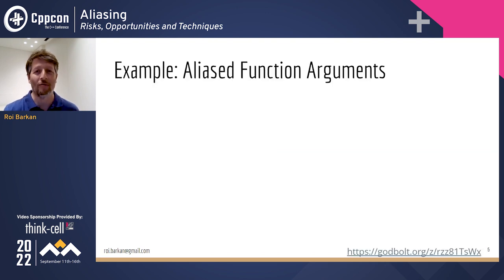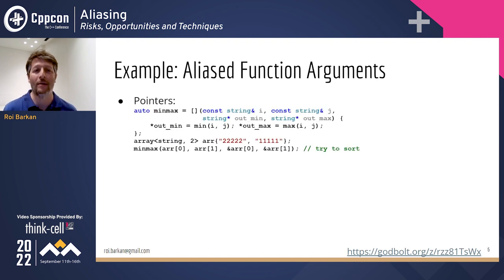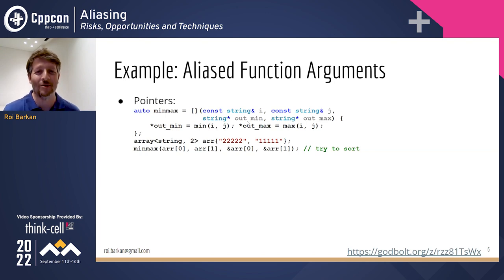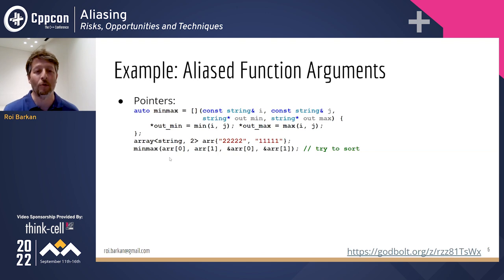One of the most common aliasing cases involves function arguments. Let's look at a min-max function implemented as a lambda. It accepts two inputs, i and j, tries to find the minimum and maximum, and returns them via output pointer arguments outmin and outmax. If we create an array of two strings and try to call min-max to sort the array in place, this will not work.